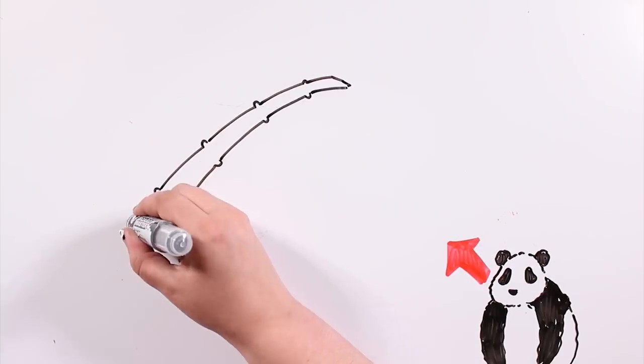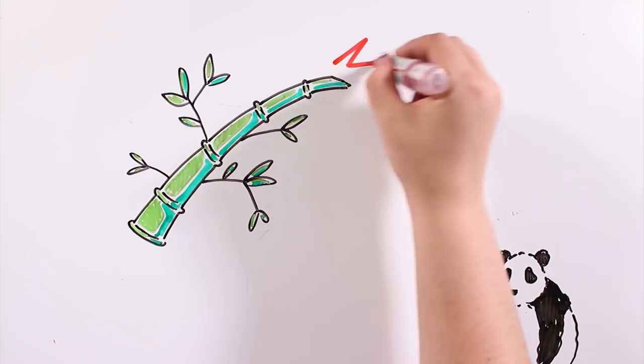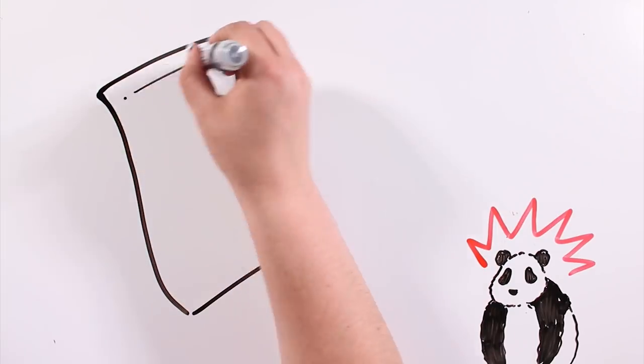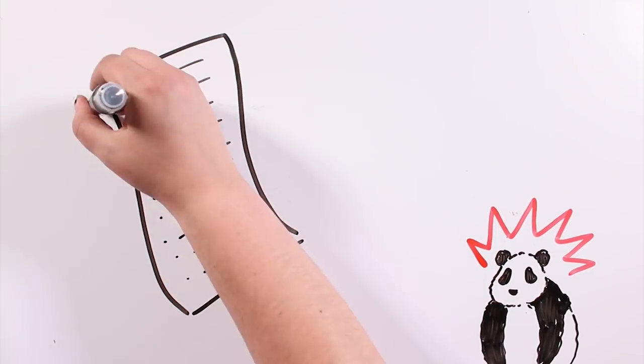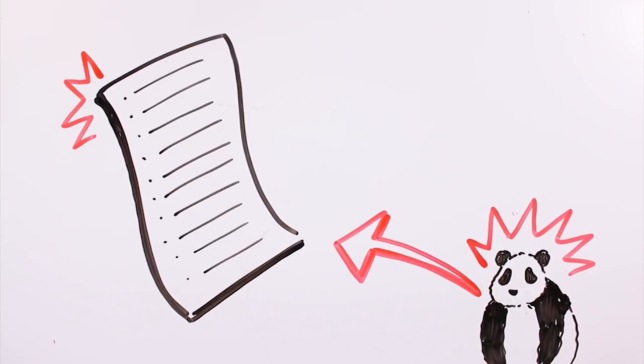Their dependence on bamboo makes pandas very vulnerable to any loss in their habitat. This and poaching placed them for many years on the list of endangered animals. Right now, they are on the list of vulnerable animals, thanks to all the conservation efforts.